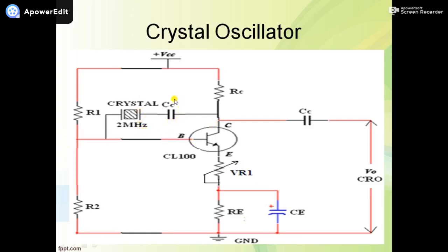We are using an input coupling capacitor and output coupling capacitors. Both capacitors are used to block unwanted DC signals and allow only AC signals to the next part of the circuit. There is also an emitter bypass capacitor — with the help of this capacitor, whatever unwanted AC signal is stored at that point can be moved towards the ground.